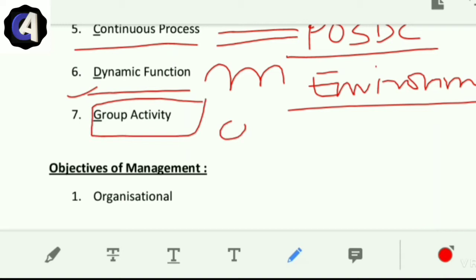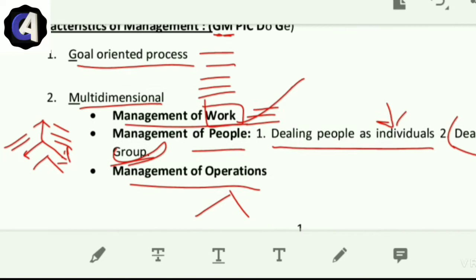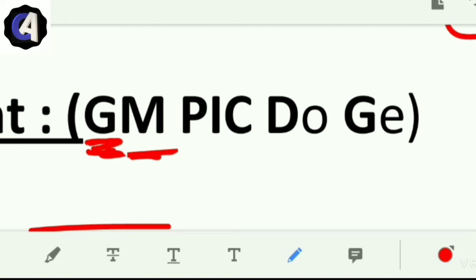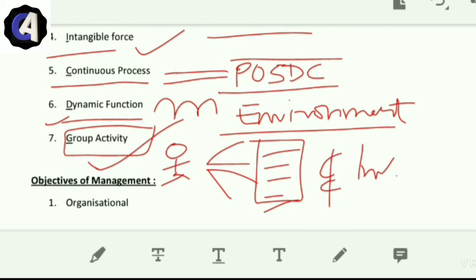Group activity means whether you are top management or any level, you have to manage some people who work as a group and as individuals. So it is a group activity. Let's revise once: GM PICK DOGE - these are the characteristics of management. It is goal-oriented, multi-dimensional, pervasive, intangible, continuous, dynamic, and group activity.